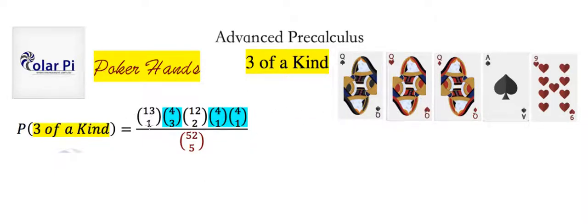That's what this 13 choose one is for. And anything highlighted is choosing a suit. So this four choose three is saying, now that you've chosen your queen, out of four suits, there are three suits that we need to pick because there are three queens. So out of four suits, we need to choose three.